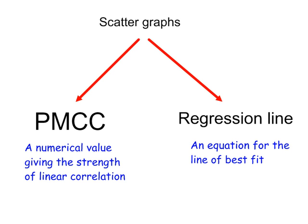For scatter graphs, you can work out the strength of linear correlation using your calculator or a formula, and that's called the PMCC, represented by the letter R. The other thing that you can work out for a scatter graph is the equation for the line of best fit, called the regression line.